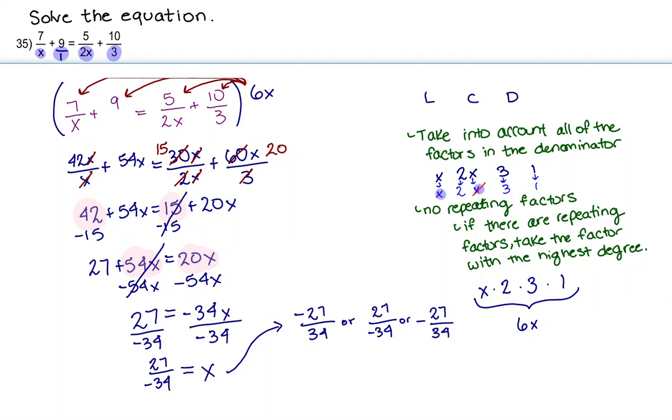So in order to find out what x can't be, we're going to set the entire denominator equal to 0 on these two fractions. So I set my first denominator here equal to 0, and I set my denominator here equal to 0. And it looks like when I solve for x for both of these, I just get x can't be 0. So my answer is going to be x can't be 0, x is negative 27 over 34.